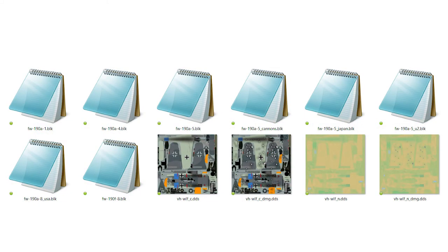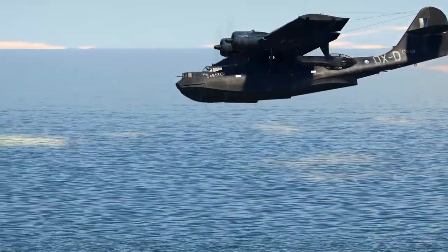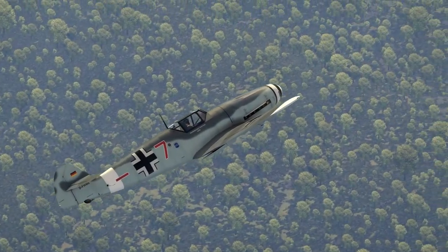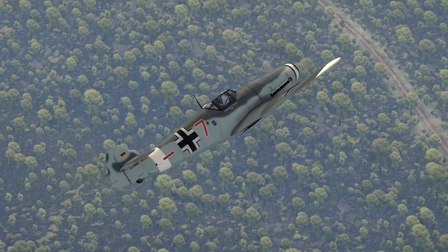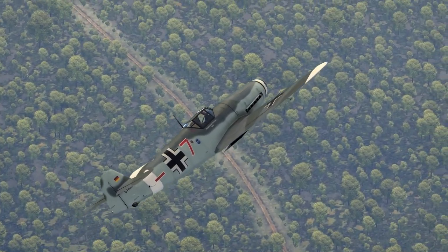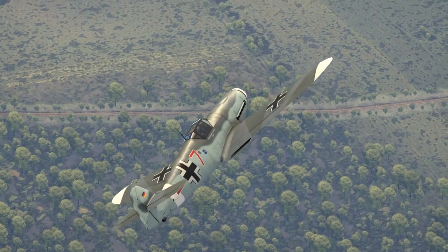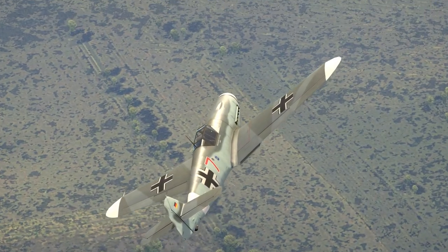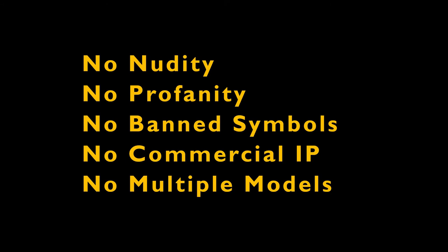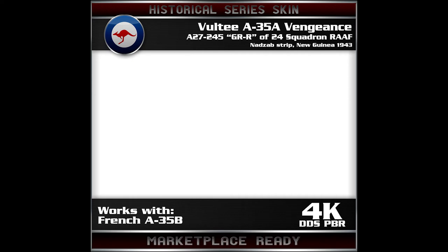The last and biggest problem for me is that marketplace skins can only be for a single make and model. On all of my skins, where something works across multiple variants, I include all of the BLKs and any extra files necessary to make them work. My Catalinas and P-39 used to work across four variants; my 109 works across ten variants. So now I'm reworking all of my skins so that they will only work with one variant, but I include a second small zip folder with all of the additional files needed to make it work on other models. For my Vengeance it has no nudity, no profanity, no banned symbols, no commercial IP, and there's only one model presently in the game, so I can add Marketplace Ready at the bottom of my frame.